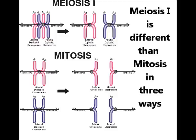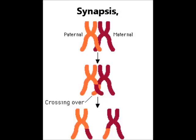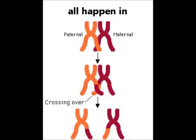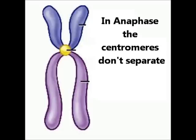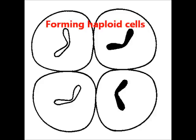Meiosis one is different than mitosis in three ways. Synapsis, tetrads, crossing over all happen in prophase. During metaphase, tetrads all line up on the metaphase plate. In anaphase, centromeres don't separate. Forming haploid cells.